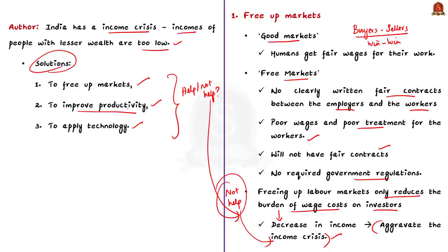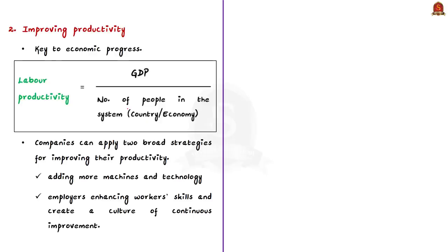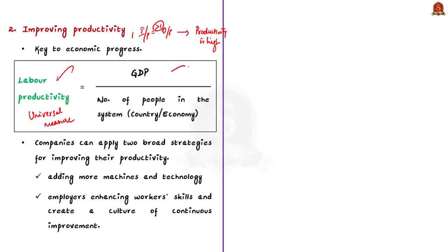The next solution is improving productivity, which is key to economic progress. Productivity is a ratio of output to input. Here the author focuses on labor productivity, used by economists as a universal measure of an economy's productivity. Labor productivity means GDP divided by the number of people in that system. If labor productivity has to increase, the contribution of one unit of labor should increase over time. Companies apply two broad strategies: adding more machines and technology to supplement worker capacity, which is good for capital-rich enterprises; or enhancing worker skills and creating a culture of continuous improvement with limited capital resources.